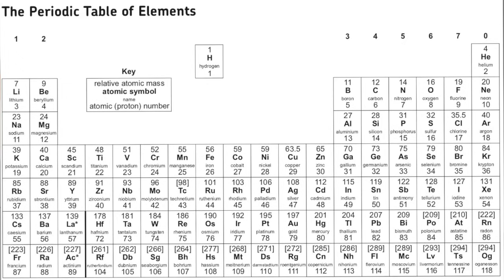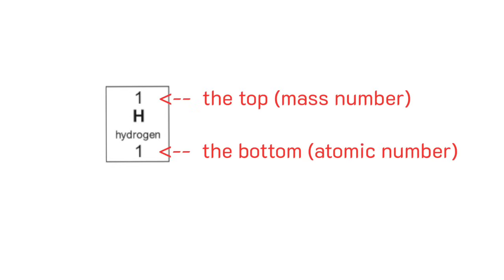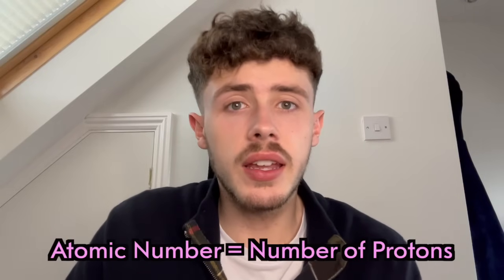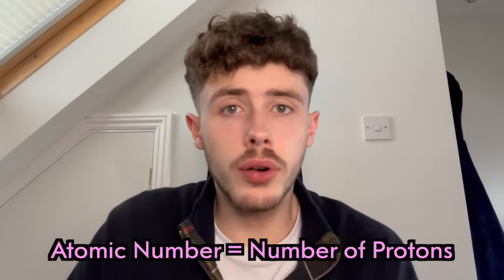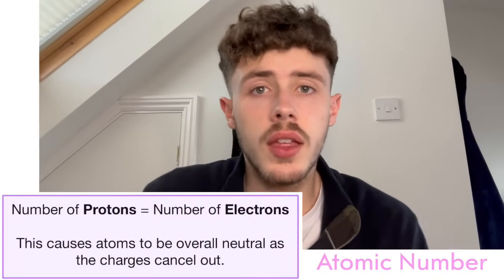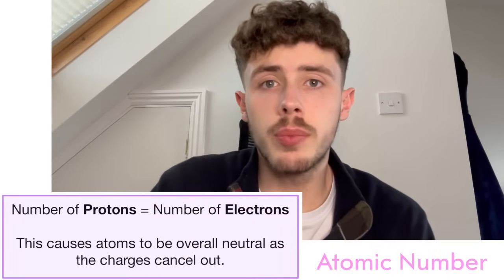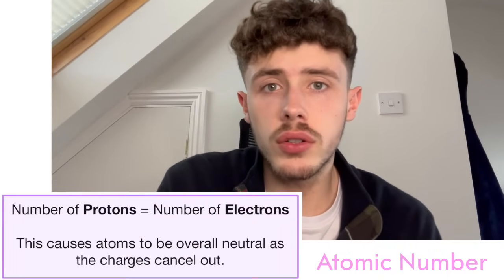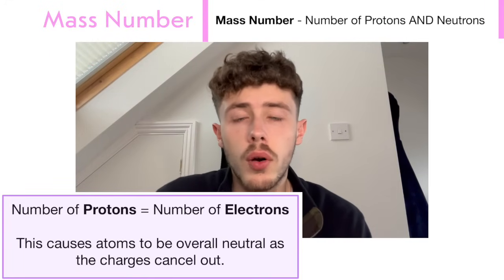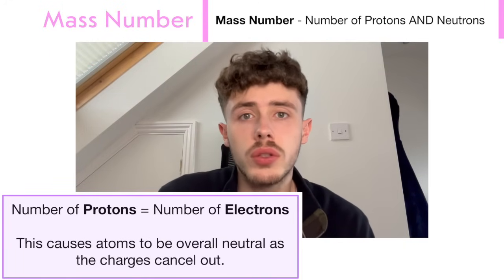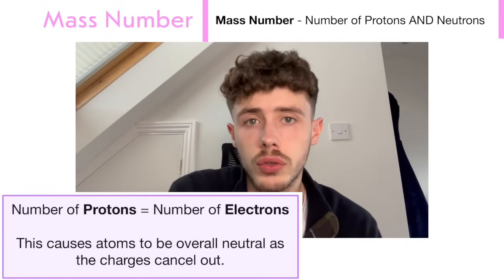On the periodic table, you'll notice every single element is laid out, and there will be a number at the top and a number at the bottom. One of these is the atomic number, one of these is the mass number. The atomic number indicates the number of protons, this is matched by the number of electrons, and the mass number is the sum of the number of protons and neutrons.